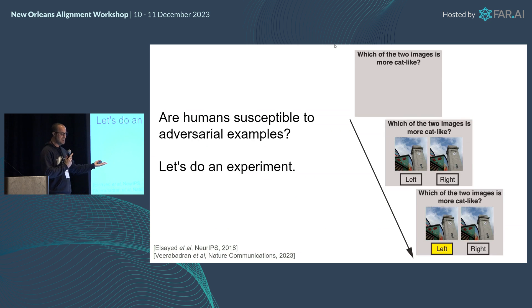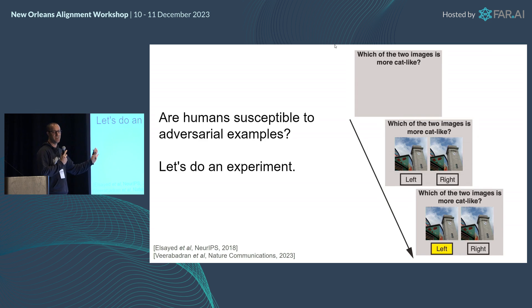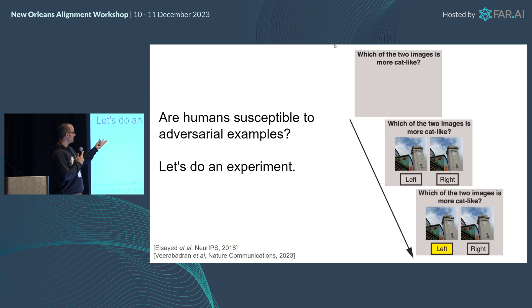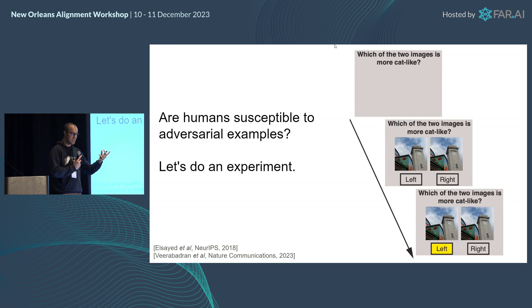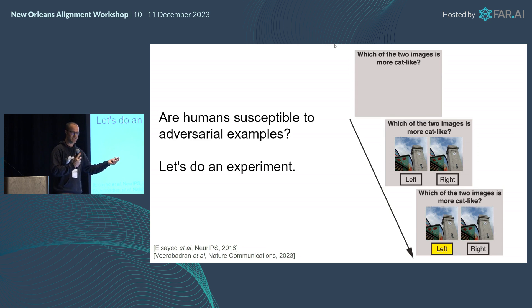We actually ran a whole suite of different experimental conditions, but I'm just going to describe one in the talk. We had subjects look at a screen and we showed them two images and we said: which of these two images makes you think it's more like a cat? And of course neither of them is a cat, but you still have to choose one of the two images.